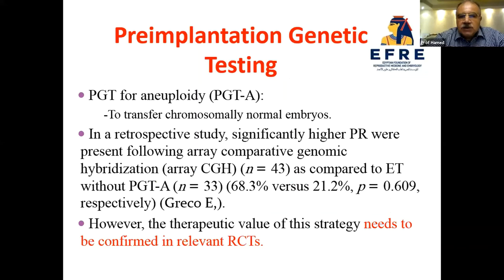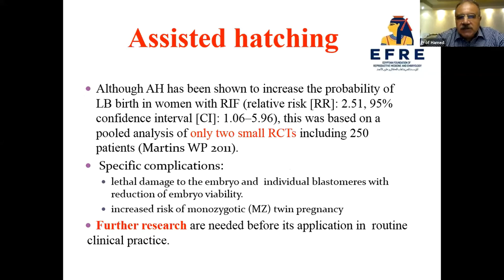Regarding preimplantation genetic testing for aneuploidy (PGT-A), the aim is to transfer chromosomally normal embryos. In a retrospective study, significantly higher pregnancy rates were observed following array comparative genomic hybridization compared to embryo transfer without PGT-A. However, the therapeutic value of this strategy needs confirmation in a relevant randomized controlled trial.